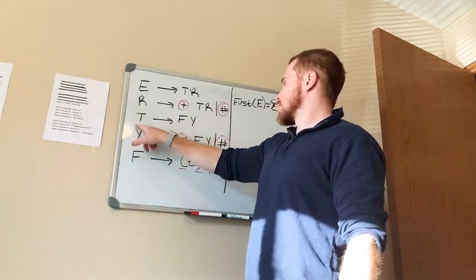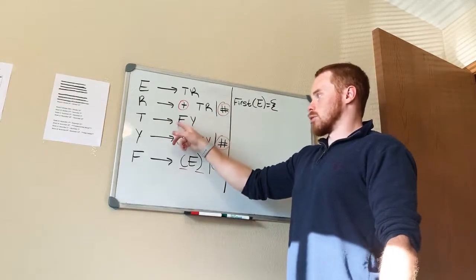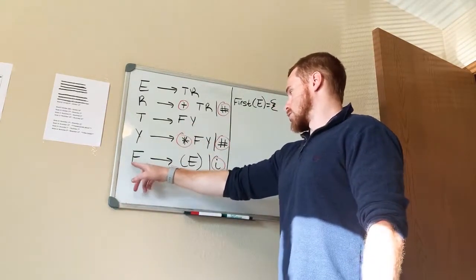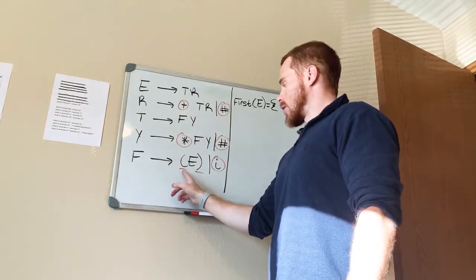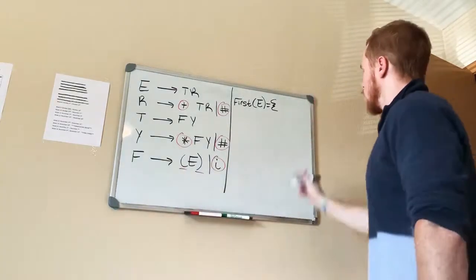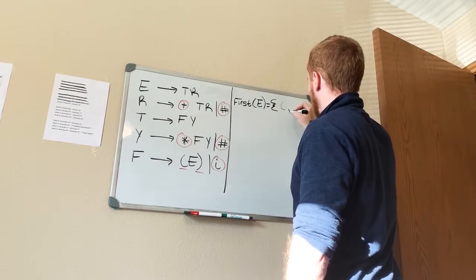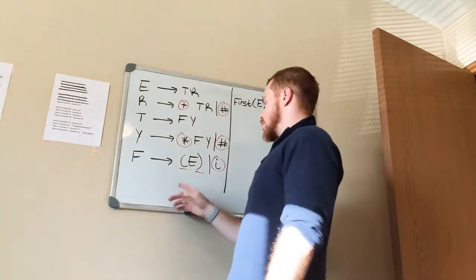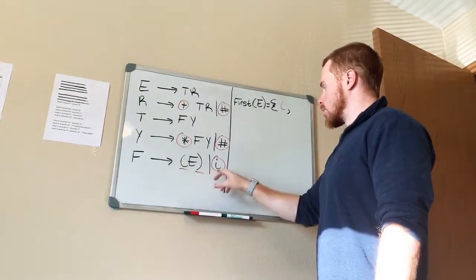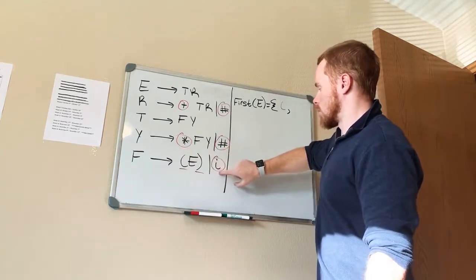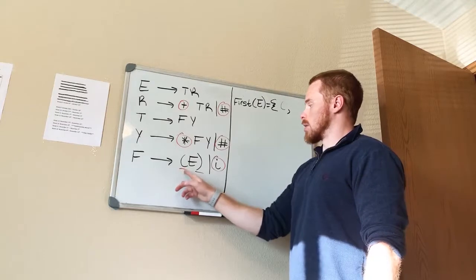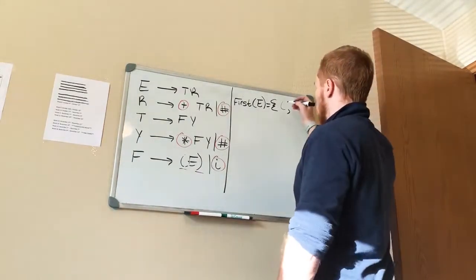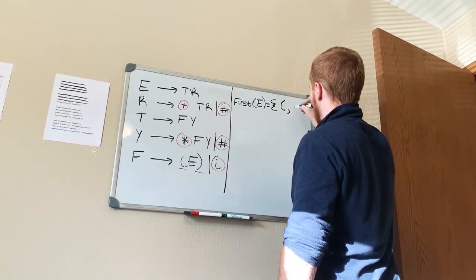Since T has no terminal symbol to pick up directly, you have to calculate First(F). Go to the rule for F — we finally found a terminal symbol: the open parenthesis. Now, because of the 'or', you can either grab the open parenthesis or calculate the other option. The lowercase 'i' is also a terminal symbol. So First(E) contains open parenthesis and lowercase i.